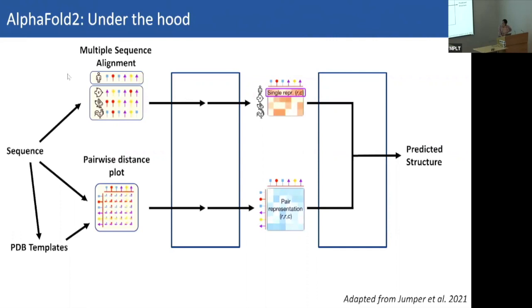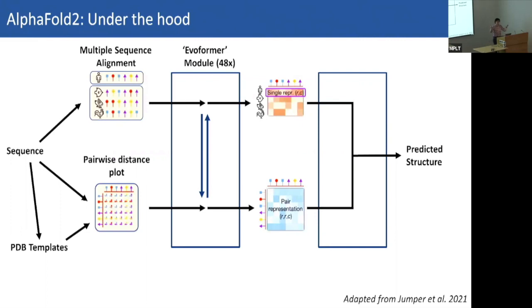These two inputs feed into the first neural network, called the Evoformer module. I don't fully understand what this does, but it allows for information exchange between the multiple sequence alignment and the pairwise distance plot. Two residues at opposite ends of the protein sequence that are interacting will co-evolve together — this neural network assimilates those instances, which is why it goes above and beyond a typical multiple sequence alignment.